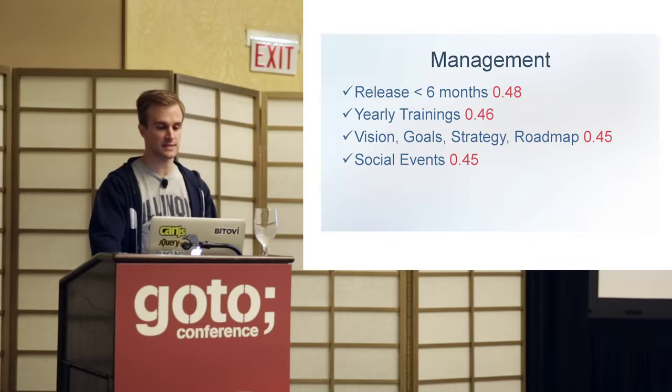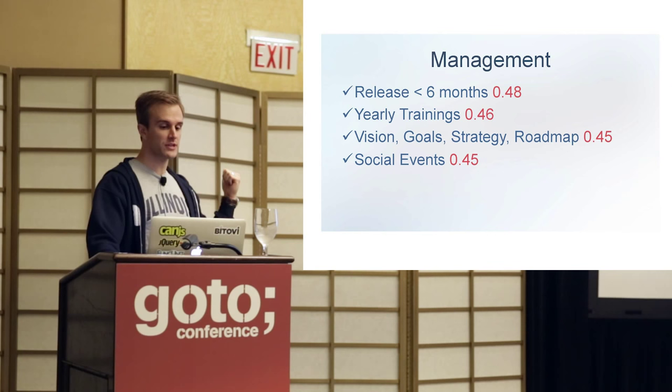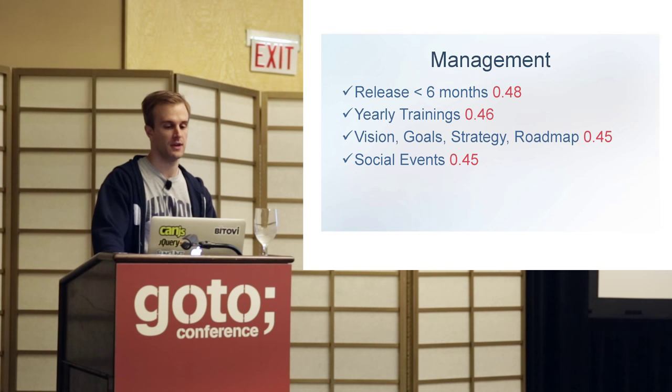Because we've done so many projects — over probably 34 now — we have some interesting data regarding what correlates strongest with success. These are the highest management-related things that correlate to success. The number one thing is: can you release a project within six months? Things like yearly trainings and companies that actually have social events for their team outside of work also strongly correlate to success.